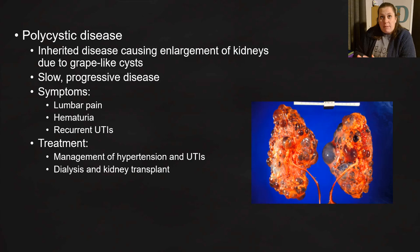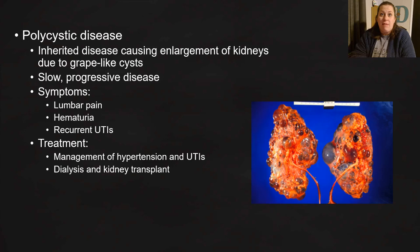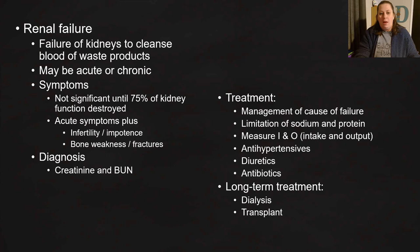Dialysis and kidney transplant may also be needed for individuals with polycystic disease. These are end-stage treatments when kidney failure is already occurring. Patients are typically not placed on the kidney transplant list until the kidneys are functioning at only about 35%, meaning they must undergo dialysis to clean their blood in the meantime. Once a kidney transplant is received, the patient may come off dialysis if their body does not reject the new kidney.